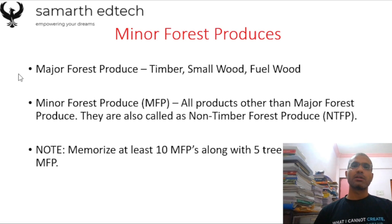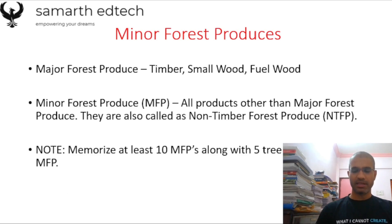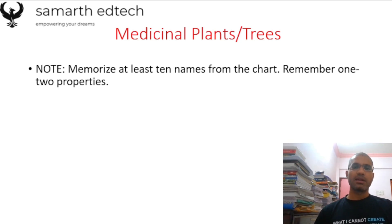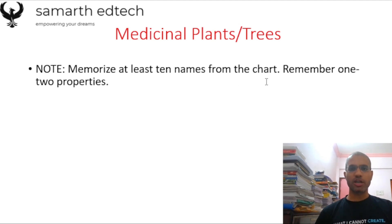You should be comfortable writing the names of non-timber forest produce as well as the trees. The next topic is medicinal plants or trees. Another table has been given in the Manikandan book. Remember at least 10 different names of medicinal plants or trees in both scientific and common name forms, because UPSC has asked for both. Also try to remember one or two properties of those medicinal plants or trees.